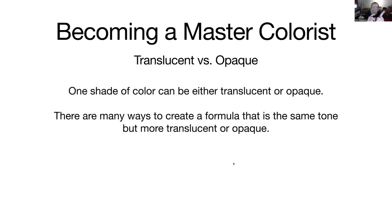One shade of color can be either translucent or opaque, but there are many different ways to create a formula where the tone is more translucent or more opaque.